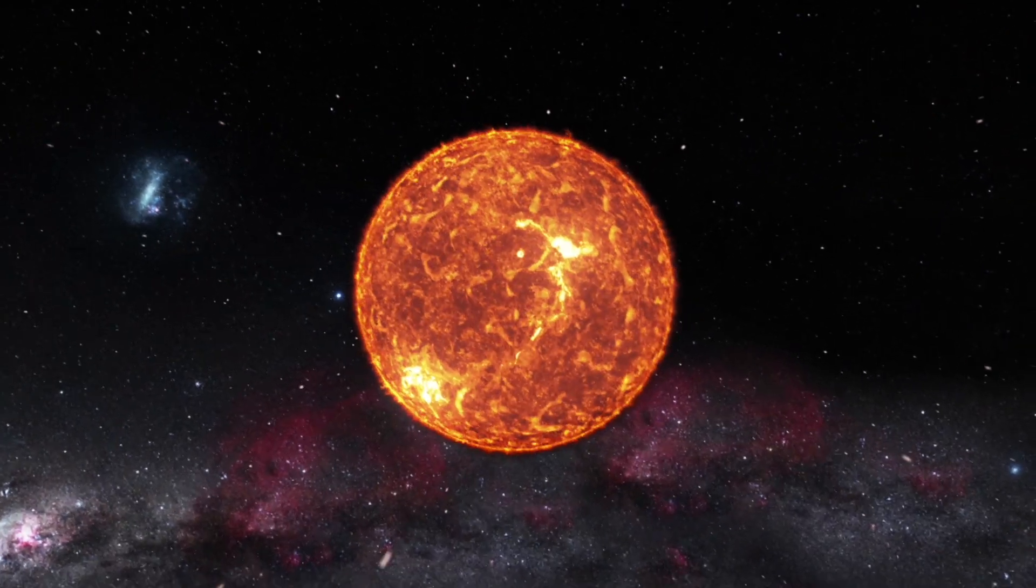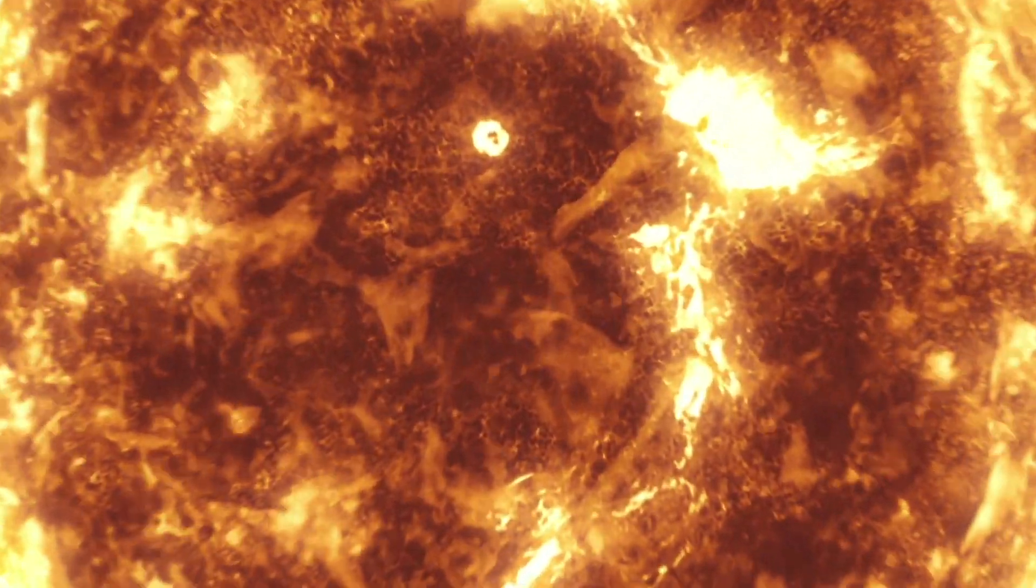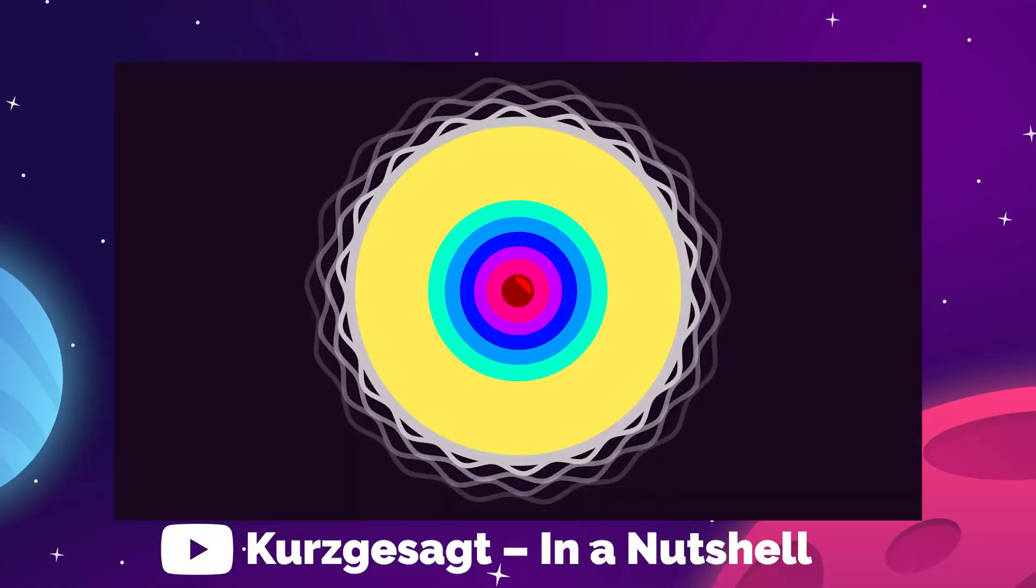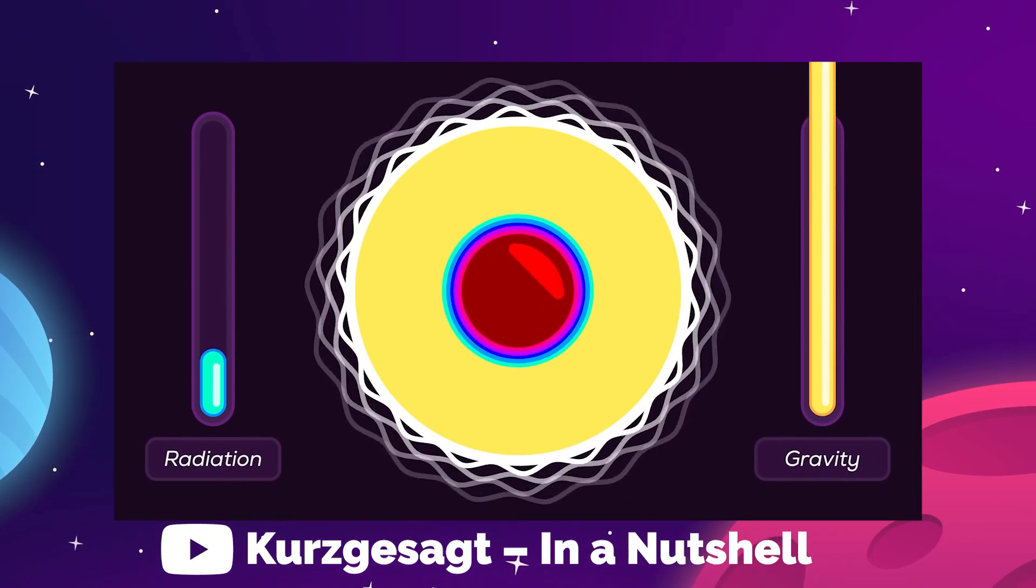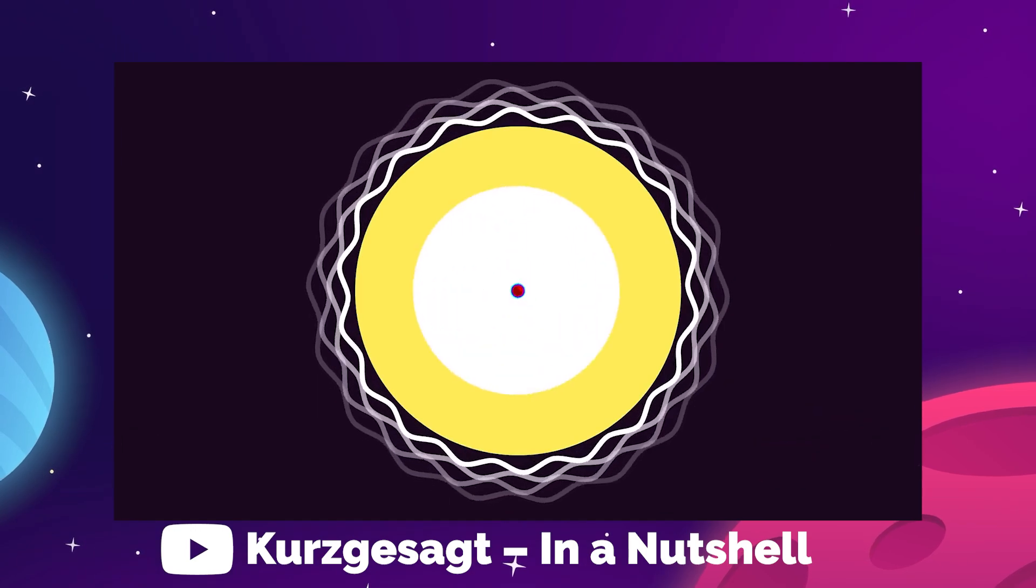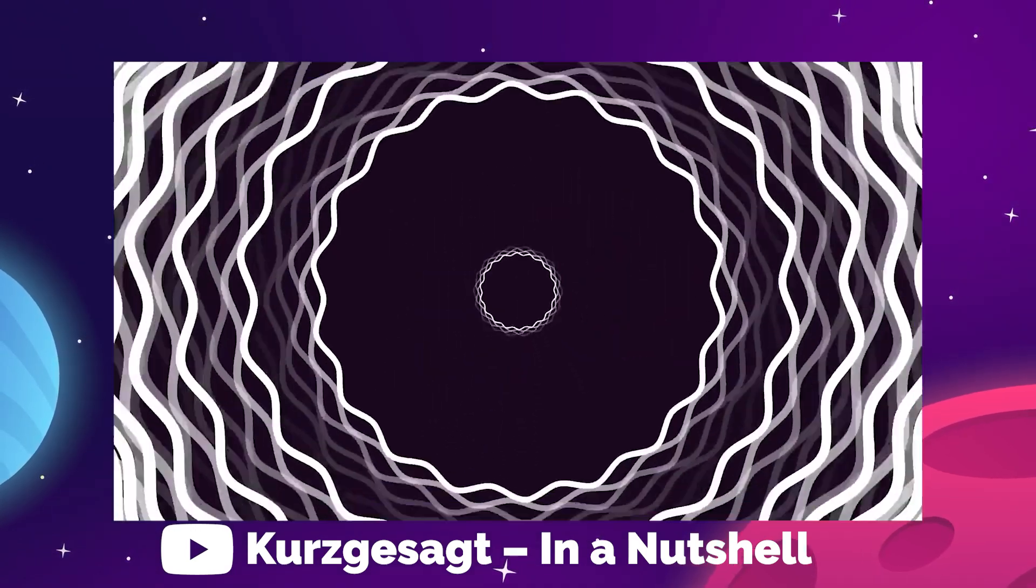But the fusion for iron no longer creates that radiation energy that pushes against gravity. So iron just builds up in the core of the star and the force of gravity goes through the roof. That leads to a collapse of the core and implosion of the entire star.